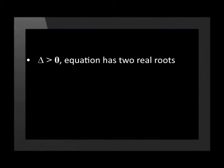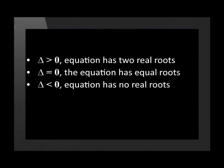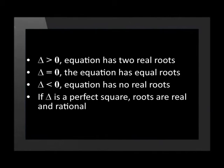Let's summarise all this information. Remember that we use the symbol delta to represent the discriminant, which is the number under the square root sign in the quadratic formula. If delta is greater than 0, the equation has two real roots. If delta equals 0, the equation has equal roots. If delta is less than 0, the equation has no real roots, or non-real roots. And if delta is a perfect square and a, b, and c are rational, then the equation has real rational roots. Take a moment to write these down.